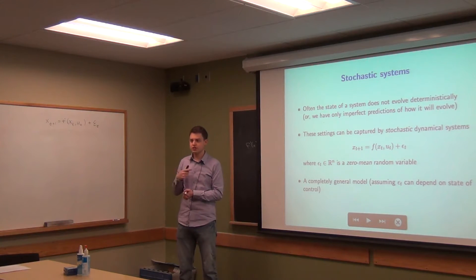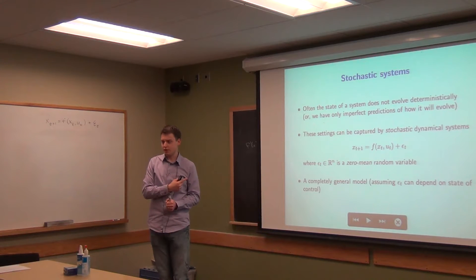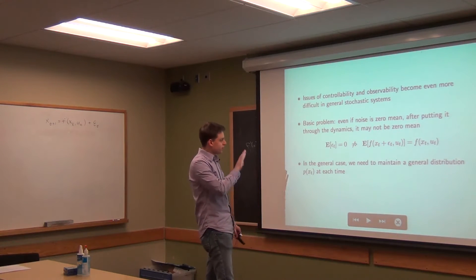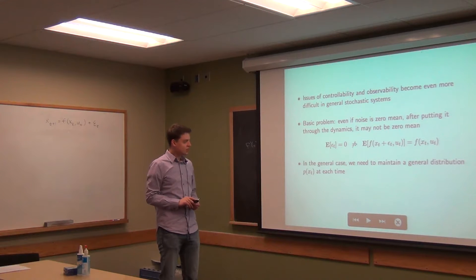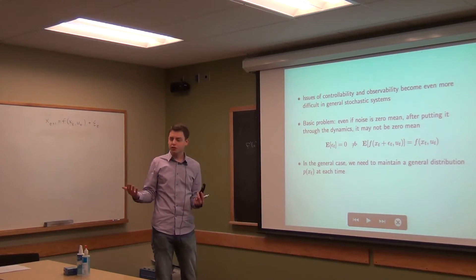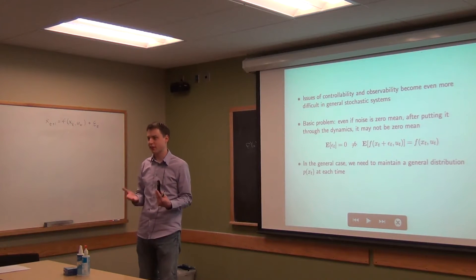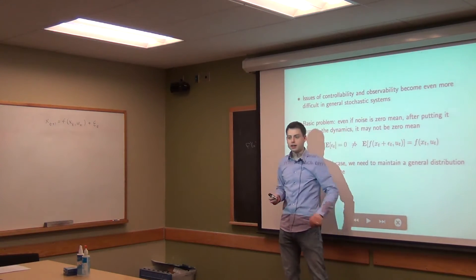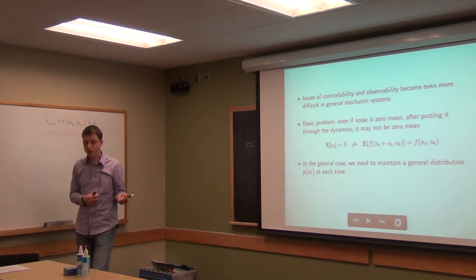The tricky part with general stochastic nonlinear systems is that issues of controllability, observability, and how you control these things become even more challenging than for general nonlinear systems. We already said those are really hard questions — we had to use Newton's method to determine the state given a sequence of observations. And for control, we can't formulate general nonlinear problems as convex problems. So these can be quite tricky.